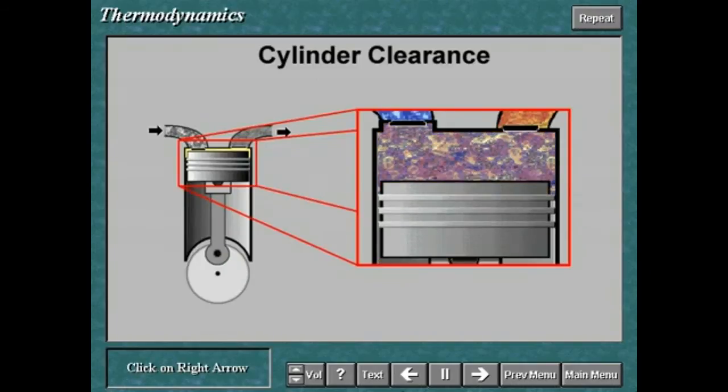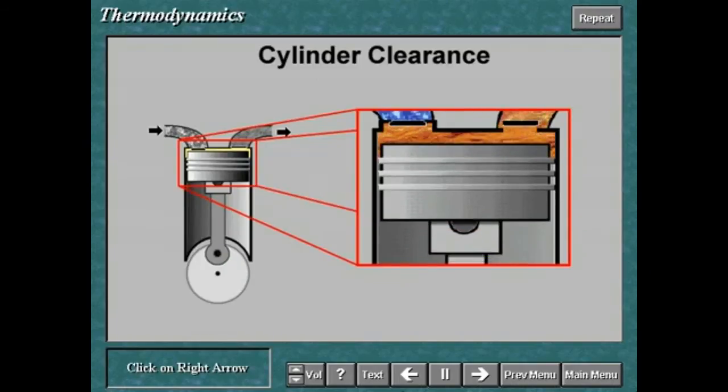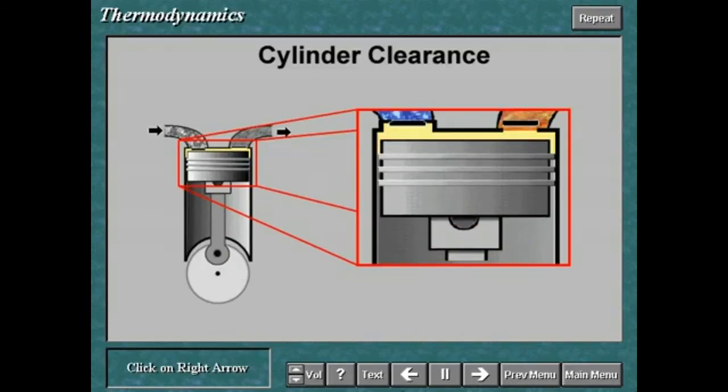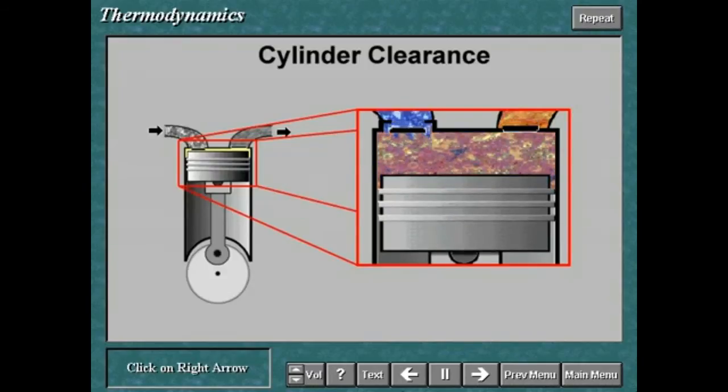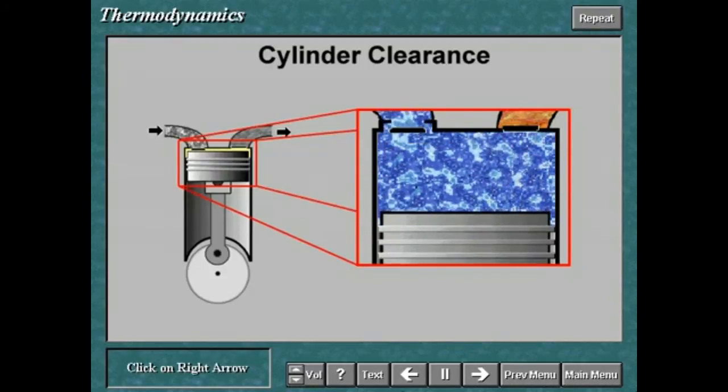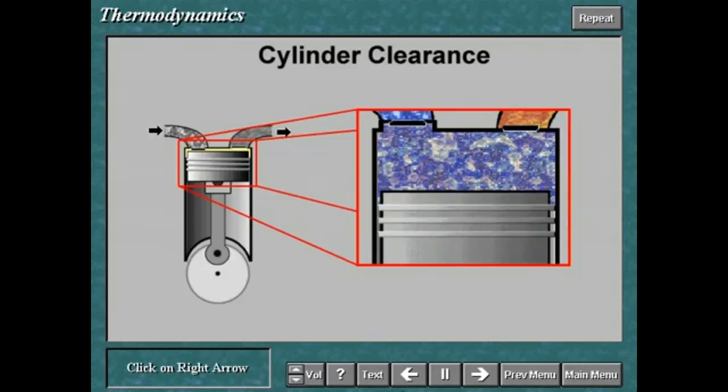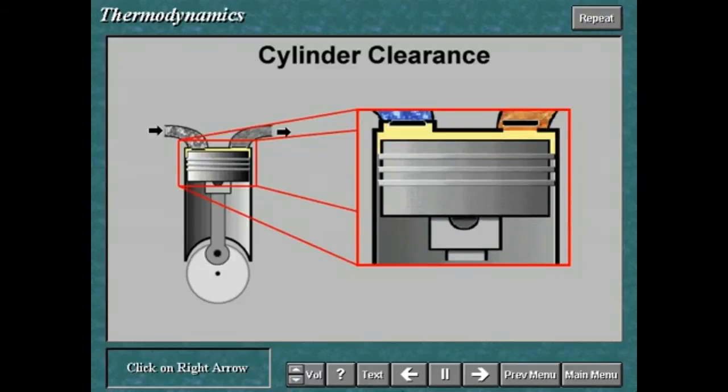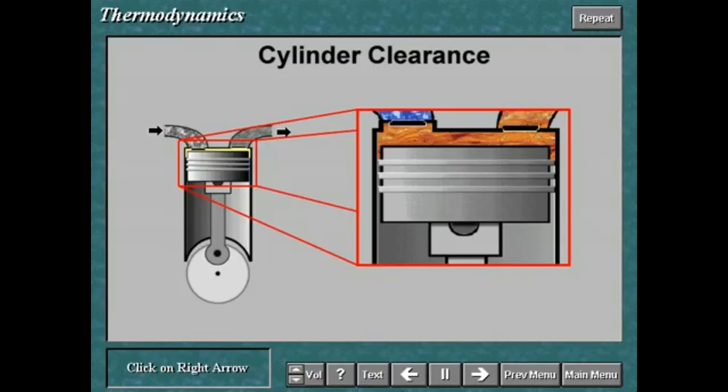Due to cylinder clearance, a certain amount of gas remains trapped within the cylinder at the end of the compression stroke. This gas is under discharge pressure and temperature. The subsequent suction phase can only begin when this remaining gas has re-expanded to pressure P sub A.